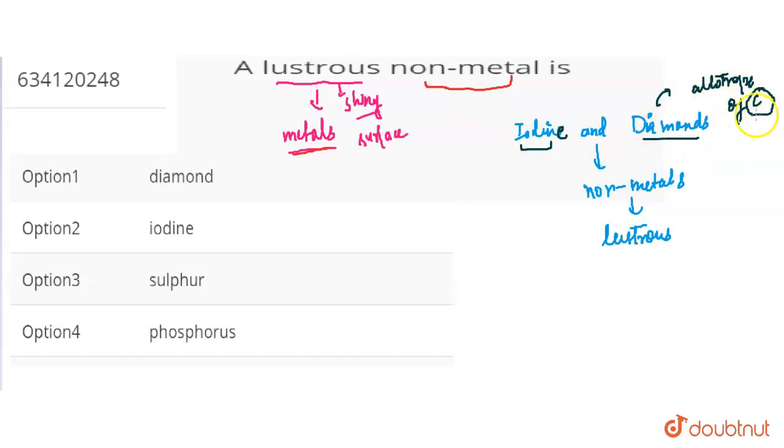If you talk about diamond, this is an allotrope of carbon, but we also consider it as a non-metal. So these are non-metals. The surface is very lustrous. So option 1 and option 2 will be correct here.